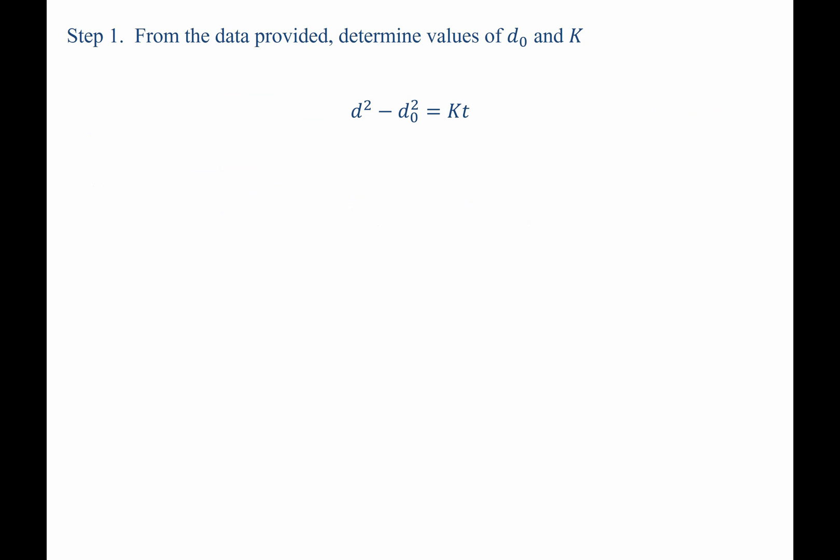Step 1, from the data provided, we need to determine d-naught and K. Here's our grain growth expression: d-squared minus d-naught-squared equals Kt.